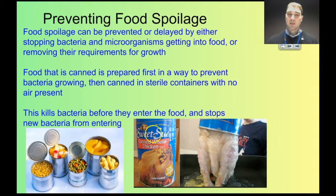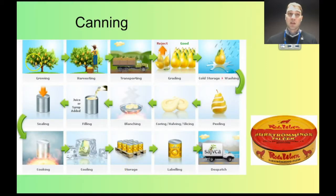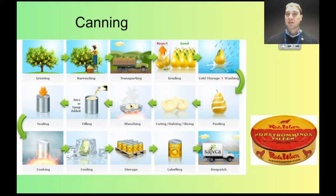A few years ago a company brought out a canned whole chicken, but it wasn't successful because it didn't look appetising once opened. Here's a picture showing the canning process — you pick your fruit, peel it, wash it, get it ready, then blanch it, which is a way of maintaining some of the flavour inside the fruit. Then you place the fruit inside the can with syrup or juice.